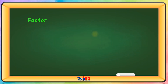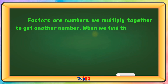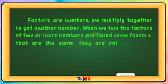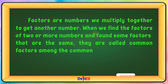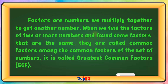Factors are numbers we multiply together to get another number. When we find the factors of two or more numbers and find some factors that are the same, they are called Common Factors. Among the common factors of a set of numbers, it is called the Greatest Common Factor, or GCF.